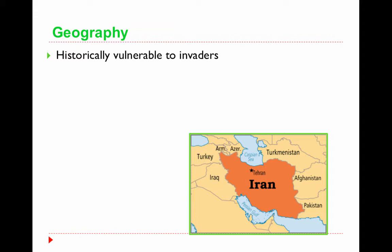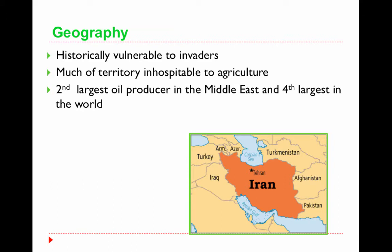When we talk about a country, we always talk about geography. Historically, Iran has been vulnerable to invaders because of its location. Early in its history, several tribes invaded and took over Iran, and that's where Iran gets its Muslim background. Much of the territory is inhospitable to agriculture. Iran is slightly larger than Alaska, and much larger than its immediate neighbors.